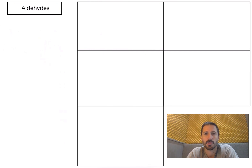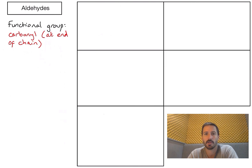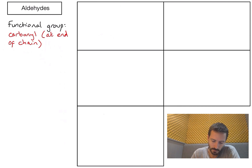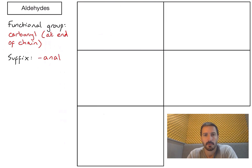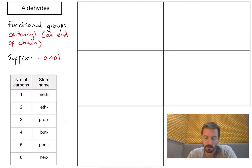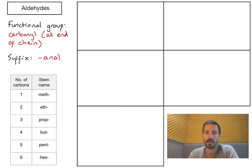In this video we're going to look at how to name aldehydes. Aldehydes are a class of compounds that contain the carbonyl functional group — a carbon double bonded to an oxygen — and in the case of aldehydes, that carbonyl needs to be at the end of the carbon chain. The key thing to know about naming aldehydes is that the suffix is going to be '-al'. For reference, we have a table of stem names relating to the number of carbons in the longest carbon chain.